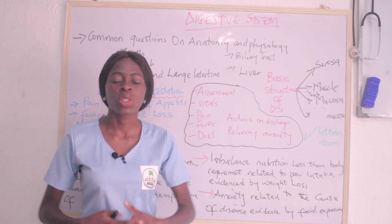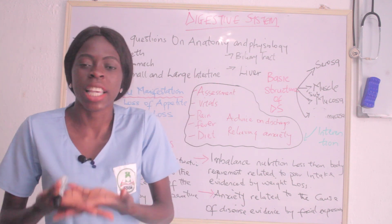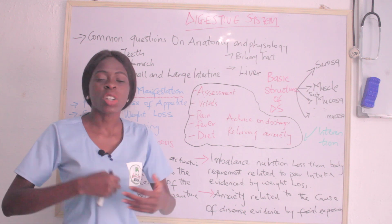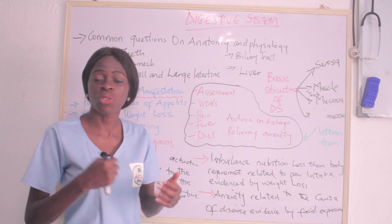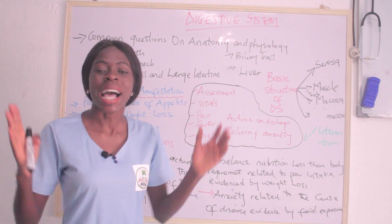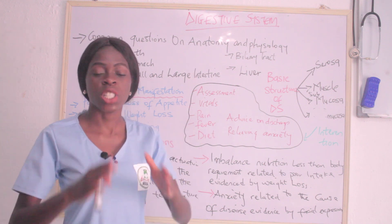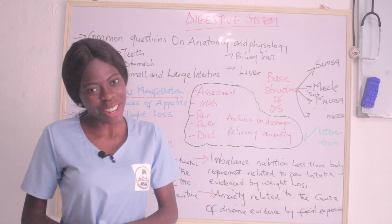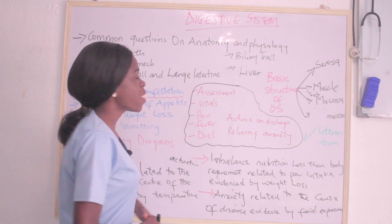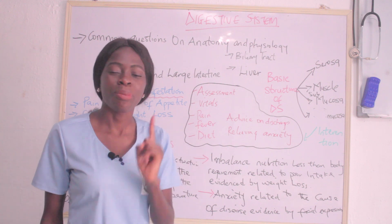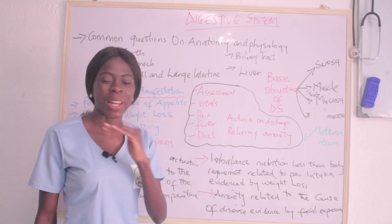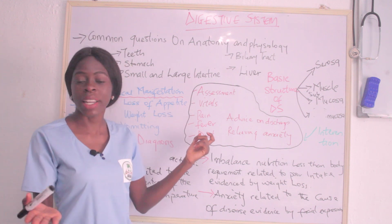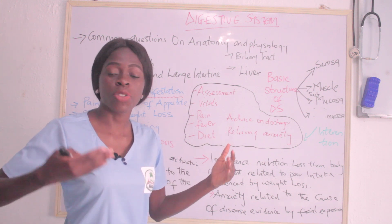That takes us to the nursing interventions — what you are expected to do when asked to write the nursing management. The first is assessment, which should be a giveaway point, because no matter what you are managing, you have to assess the patient by taking history and by physical examination. It is from the assessment that you get your nursing diagnosis. The next is monitoring the vital signs, which are fundamental data that should never be left out in nursing management.